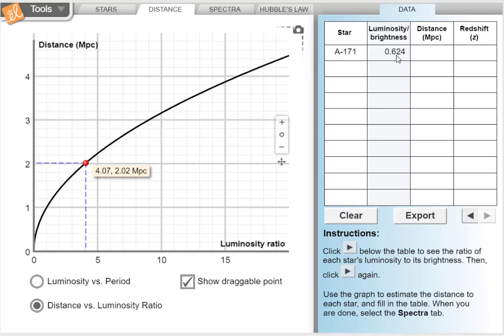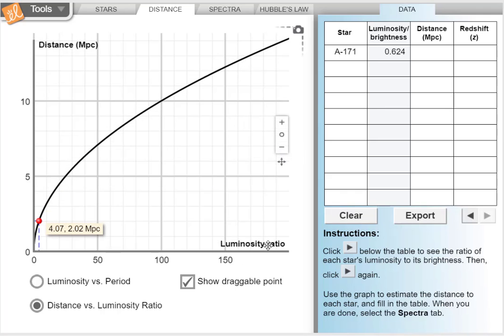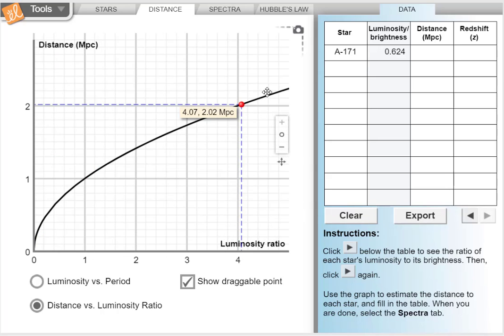And our luminosity brightness is 0.624. And there's going to be big differences in these. So you can zoom out to see high luminosity ratios, or you can zoom in to see little ones like the one we have right now, which is 0.624. So that's going to be around here, and I'll get as close as I can.